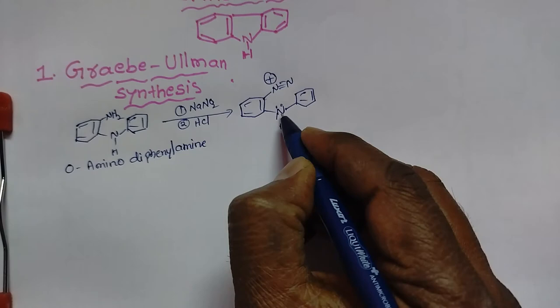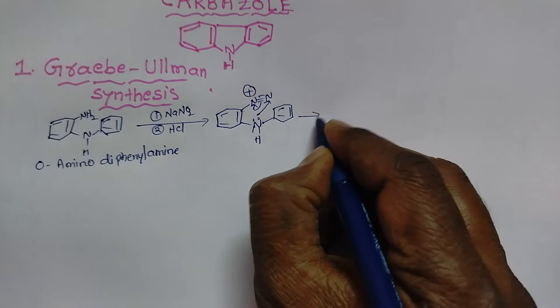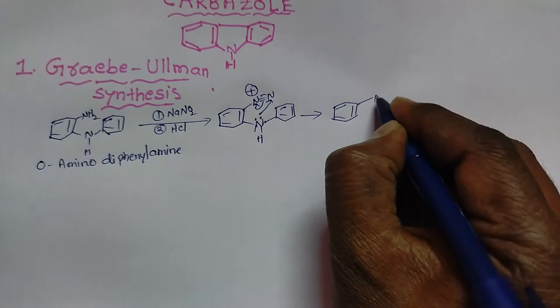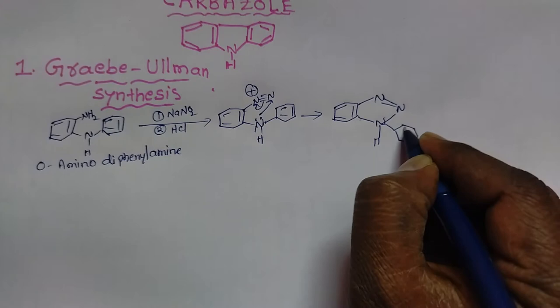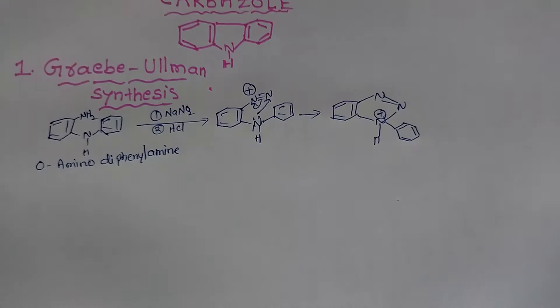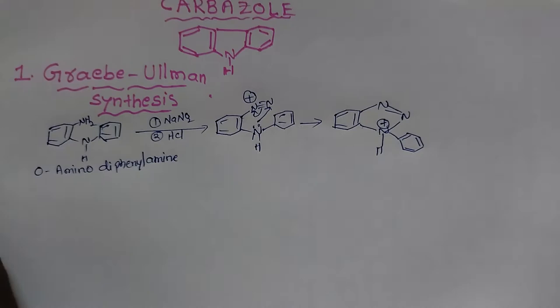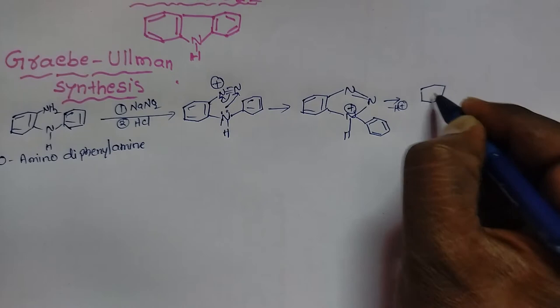The electron pair present on this nitrogen is donated, and electrons shift such that a triazole ring is formed. This nitrogen carries a positive charge. Then it loses an H+ ion and we get a triazole compound.